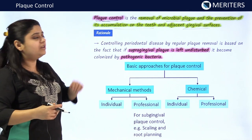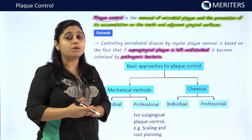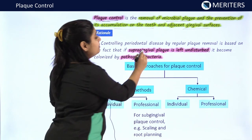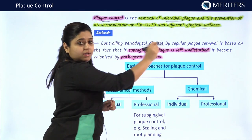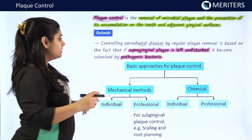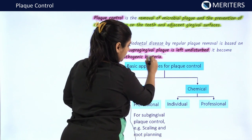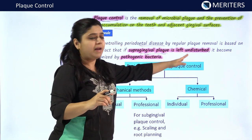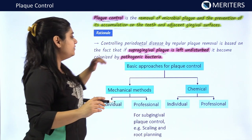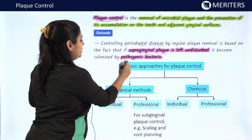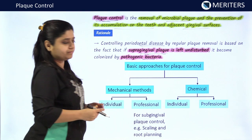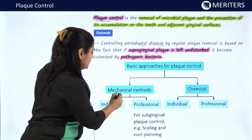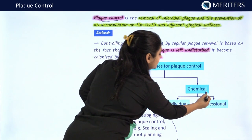What is the rationale of plaque control? Why is plaque control required? Plaque control is required to control periodontal disease by regular removal of plaque, preventing supra-gingival plaque accumulation. If supra-gingival plaque is left undisturbed, it will result in accumulation of pathogenic bacteria. Various approaches for plaque control are mechanical methods and chemical methods.